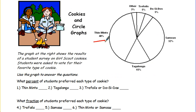You can use a circle graph to represent votes. Here we voted on our favorite Girl Scout cookies. What percent of the students preferred each type of cookie? Thin mints. So make sure, first of all, you can read your graph.